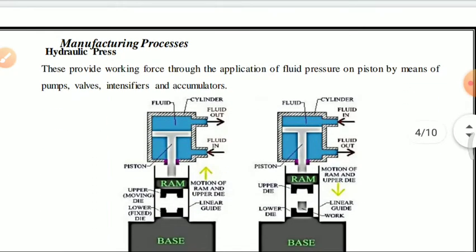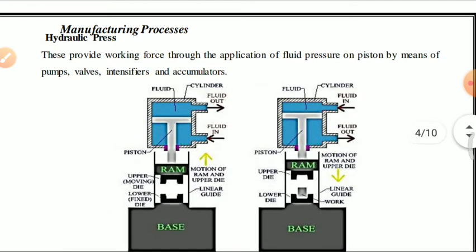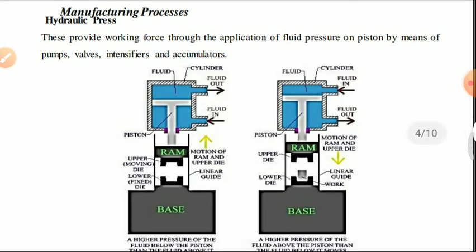A hydraulic press uses a cylinder with a piston and two openings. If fluid enters from the top opening, the piston moves downward; if fluid enters from the bottom opening, the piston moves upward. It is a very simple configuration, as shown in the diagram.